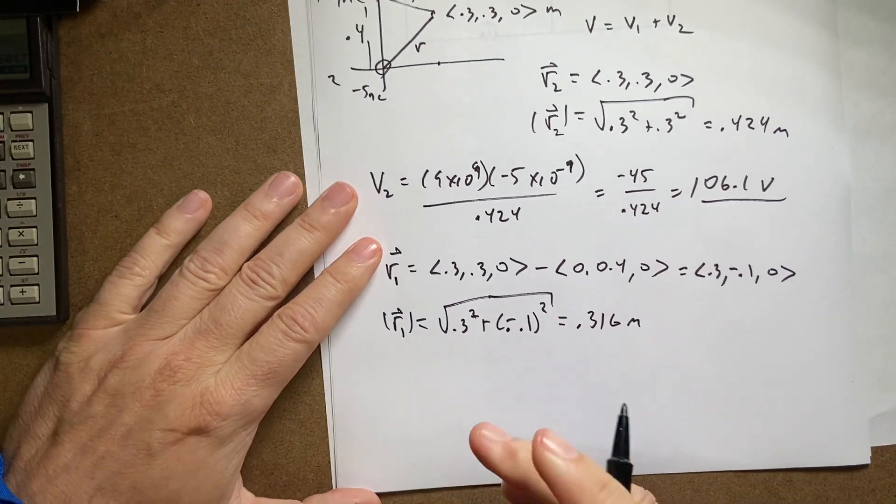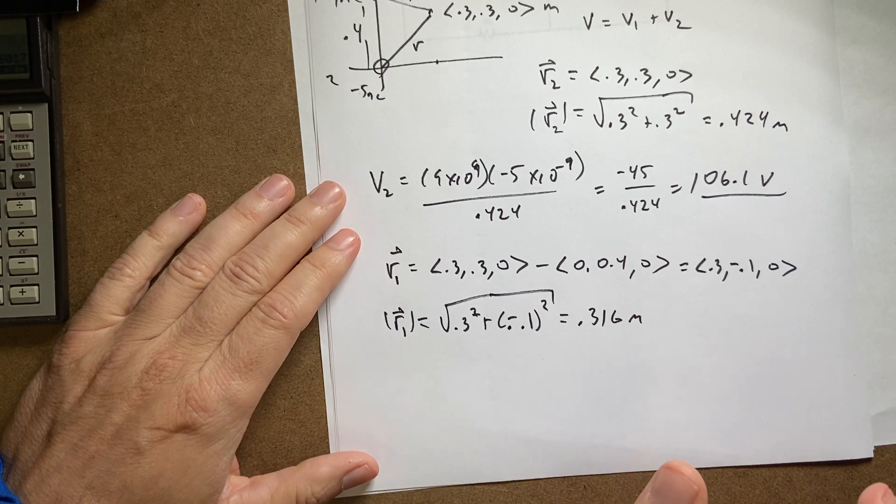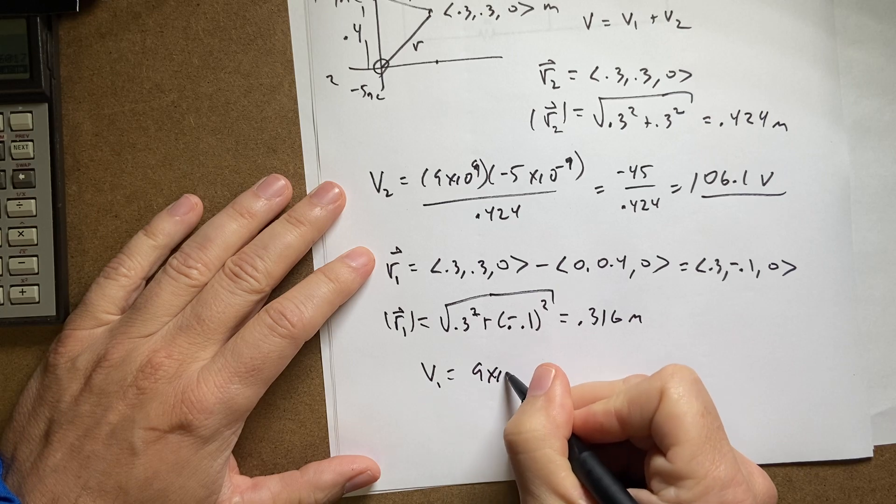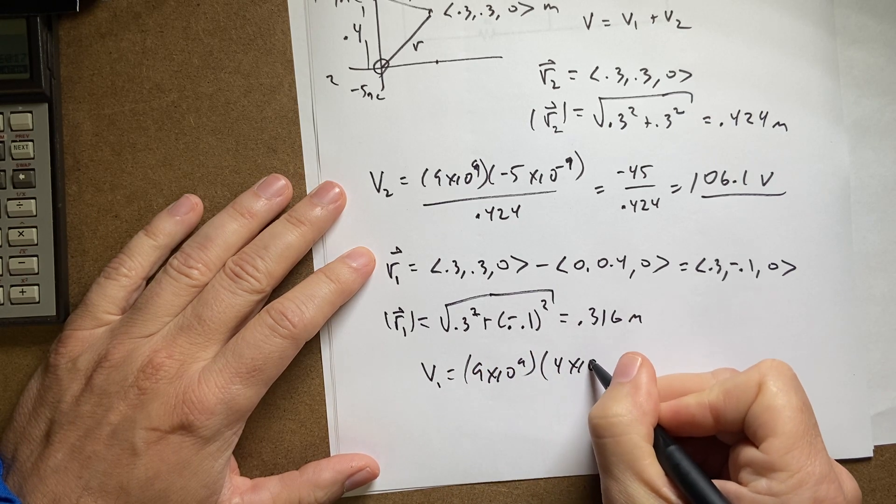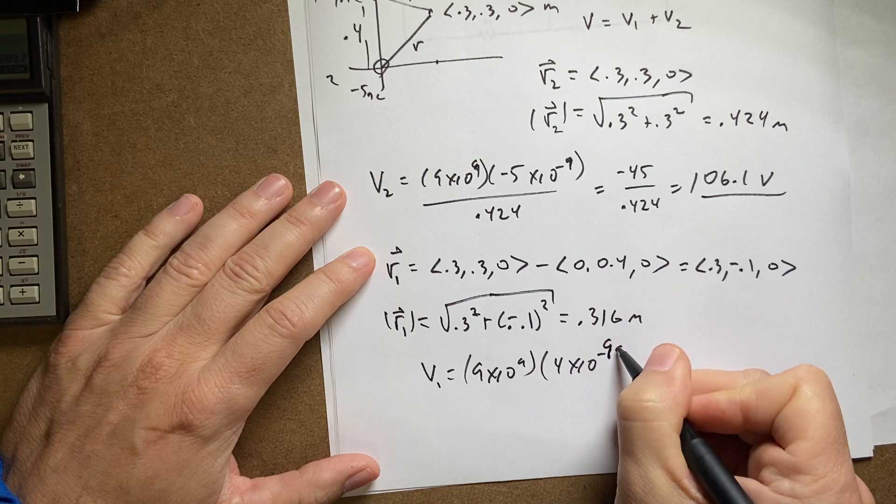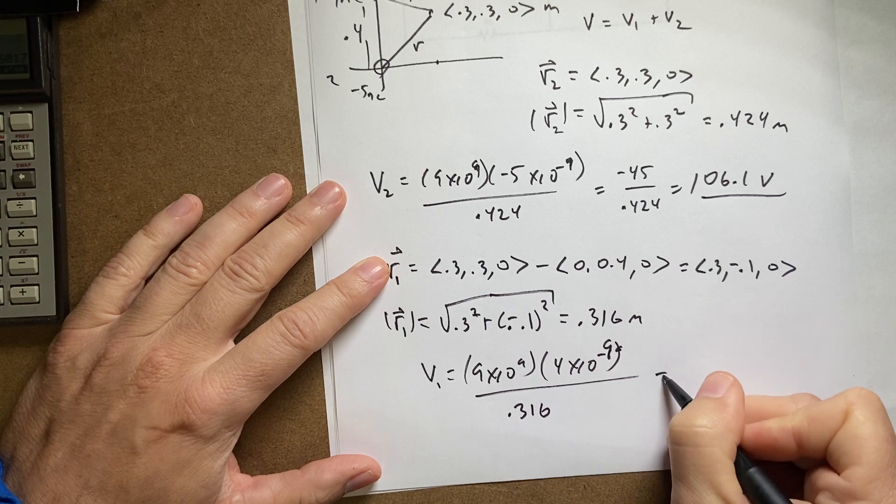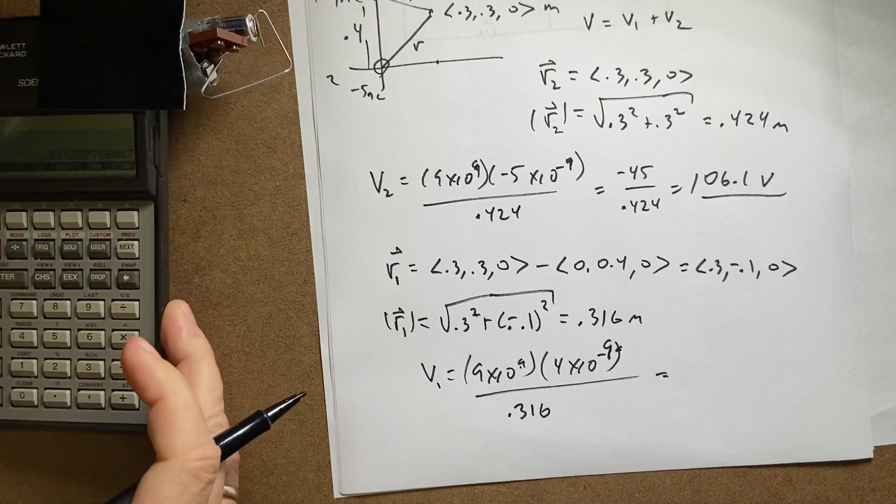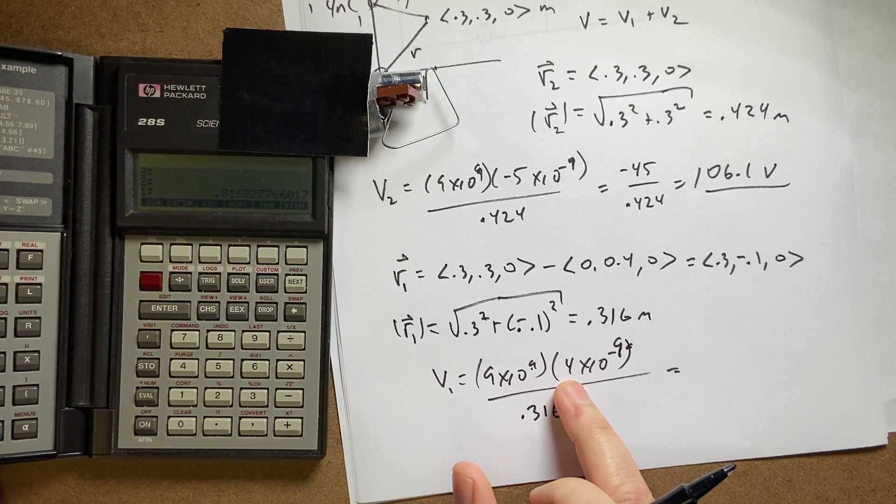So now I can calculate V1. I don't need components, I don't need the unit vector. Potential is a scalar value, it's much easier. So V1 is going to be 9 times 10 to the 9th times 4 times 10 to the negative 9th over 0.316. So again, 10 to the 9th times 10 to the negative 9th is 1.